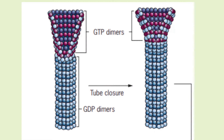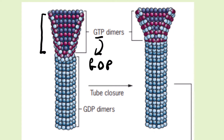The side-by-side assembly of the protofilaments creates a sheet-like structure that curls up to form a tube. This process is accompanied by the hydrolysis of GTP into GDP. The tubulin heterodimers are initially bound to GTP, and when this GTP is hydrolyzed, it causes a conformational change in the structure of the heterodimers, which then curls the sheet up into a tube-like structure.